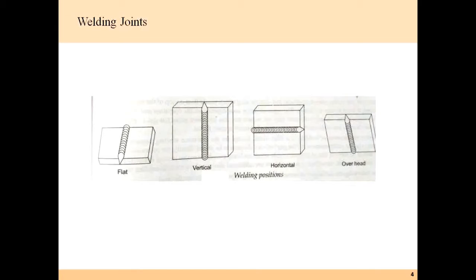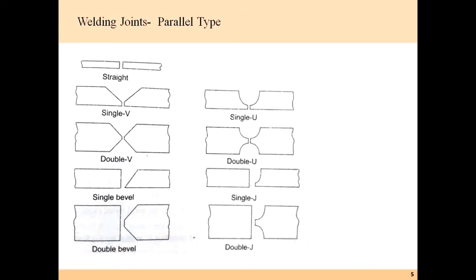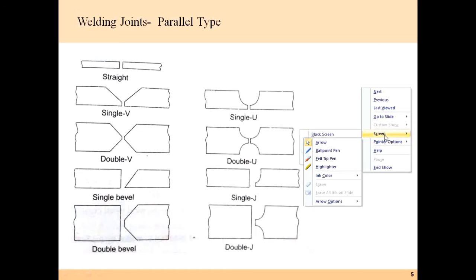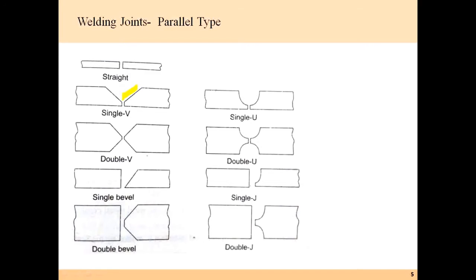These are the basic core joint positions for welding: vertical, horizontal, and overhead welding. For parallel welds, two components are touched at their surfaces and material is filled based on preparation. First there is the straight weld, then the single V-type weld, where a V groove is present and acts as the cavity for filling metal. For a double V, grooves are present on both sides.